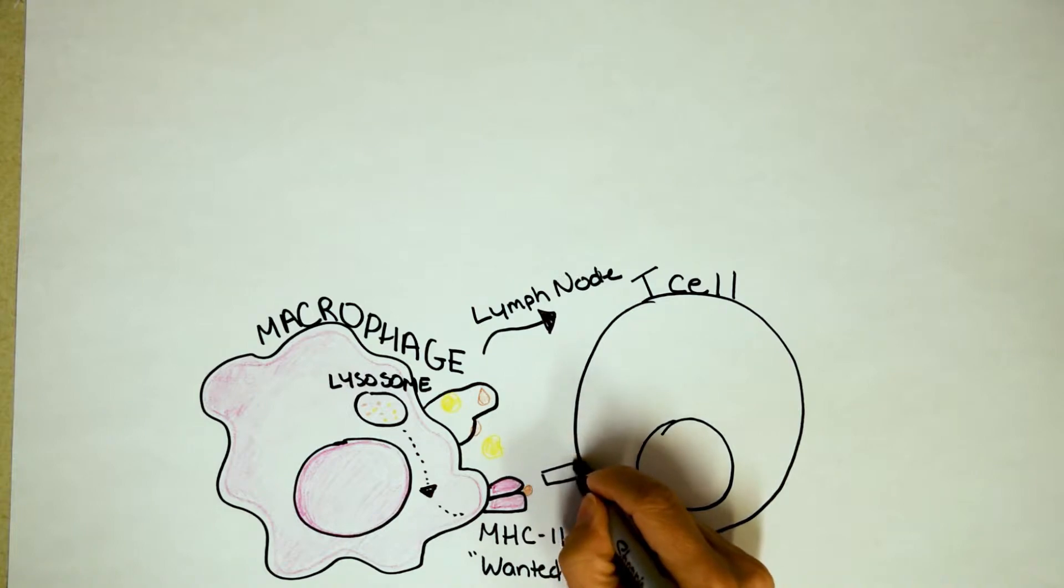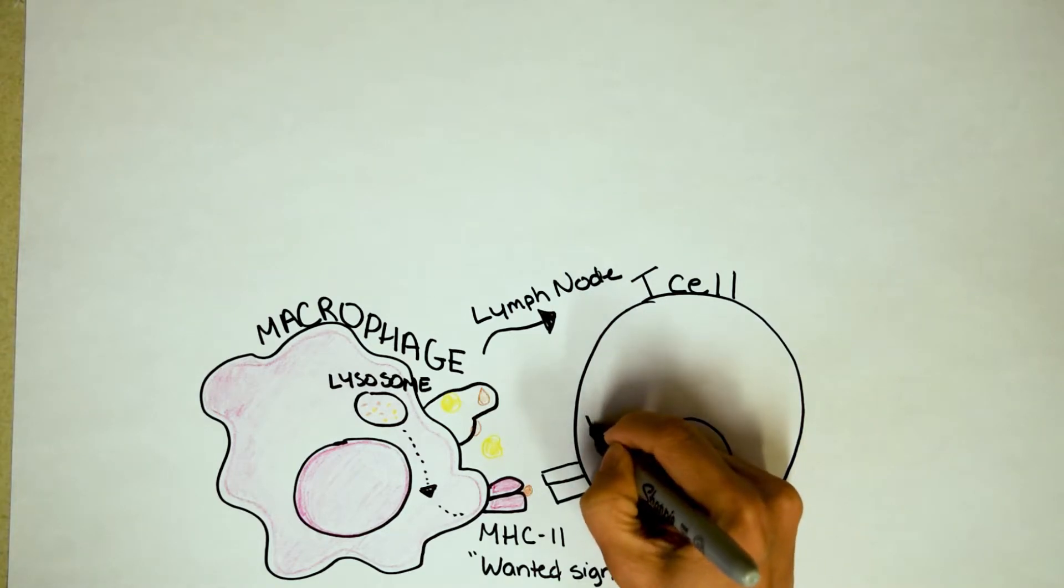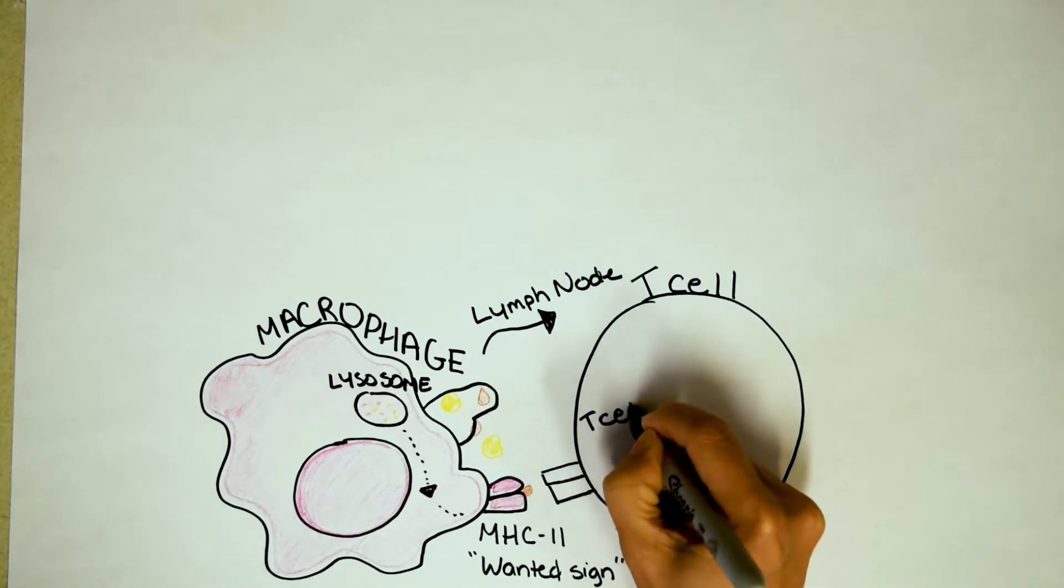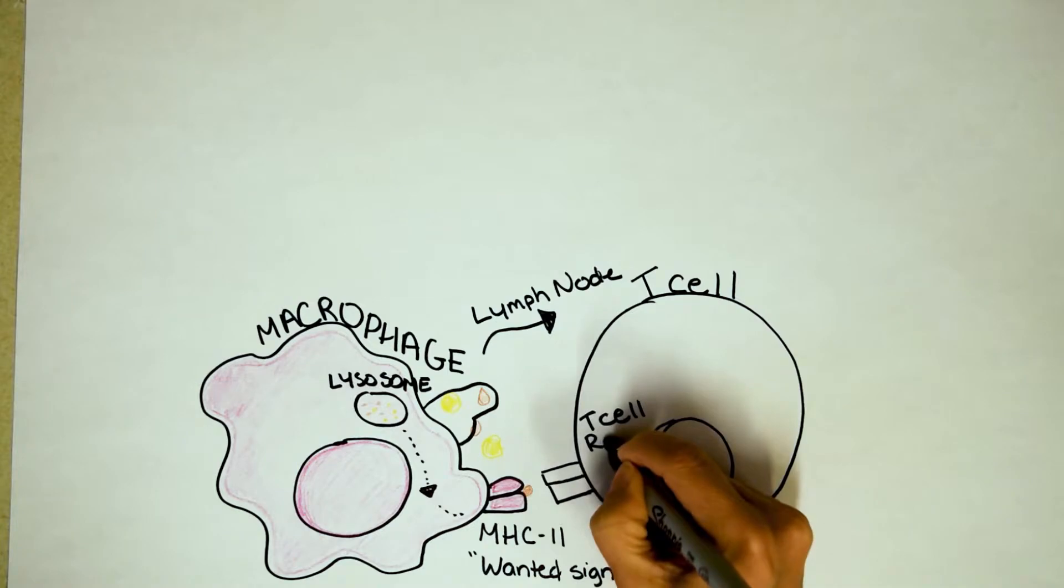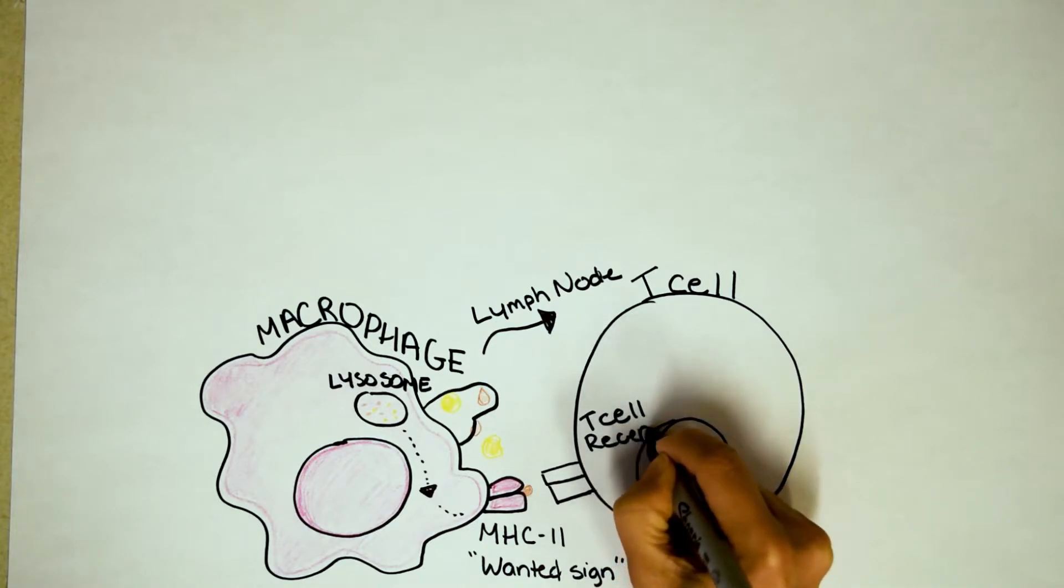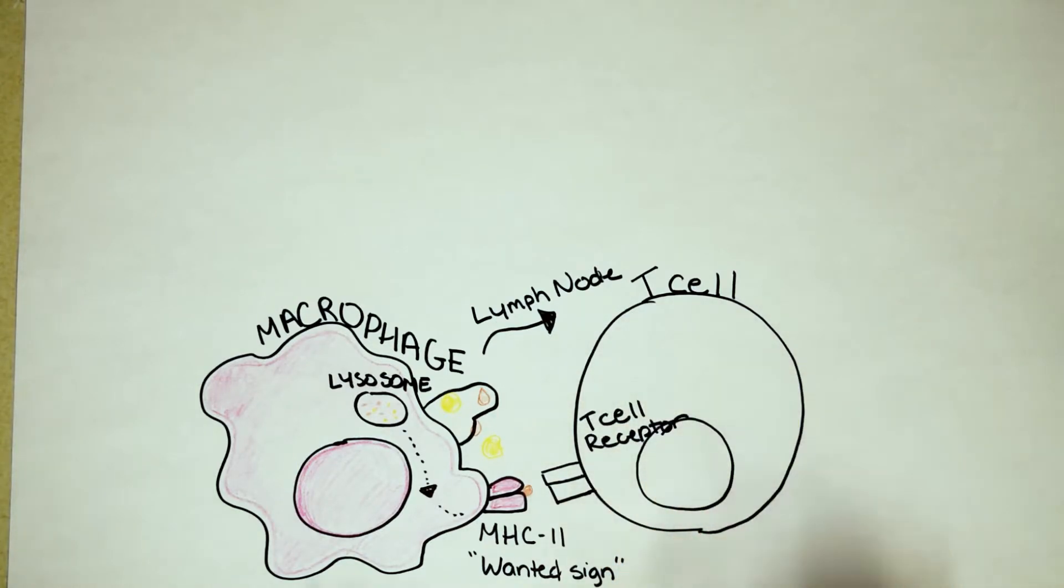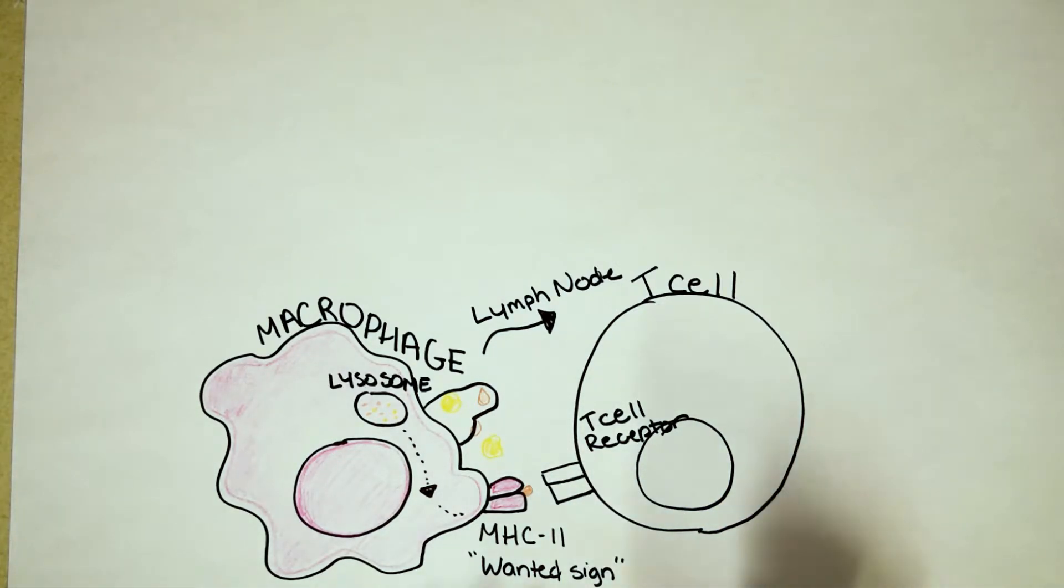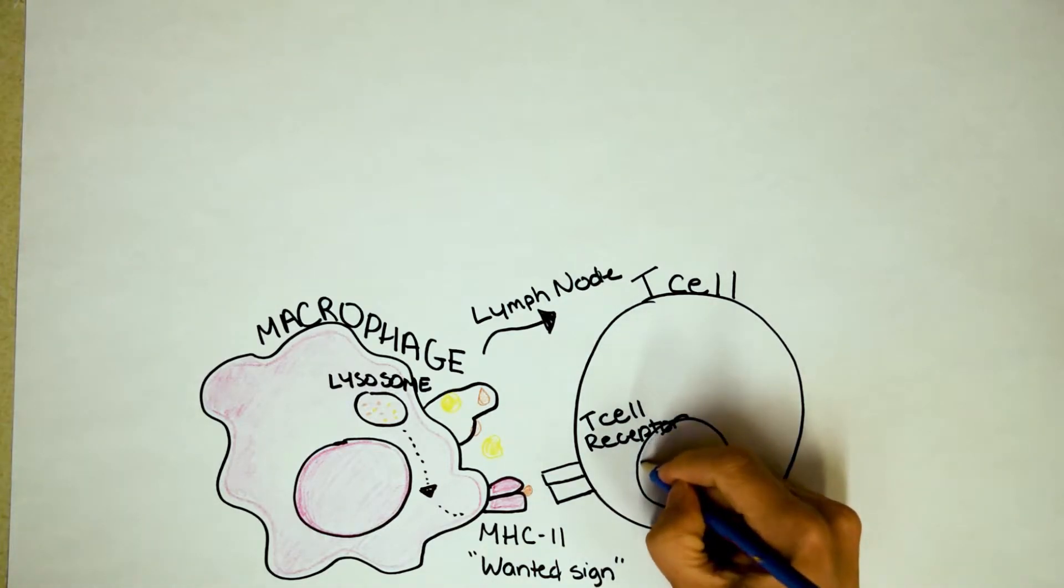And the T cell is going to come check out the wanted sign. The T cells match for the wanted sign is called a T cell receptor. I'll draw this off to the side here. T cell receptor. Hopefully that's easy to remember because this is a T cell. And if it's a perfect match, something interesting might happen. So remember, this is the very first time you've eaten a sesame bagel with eggs.